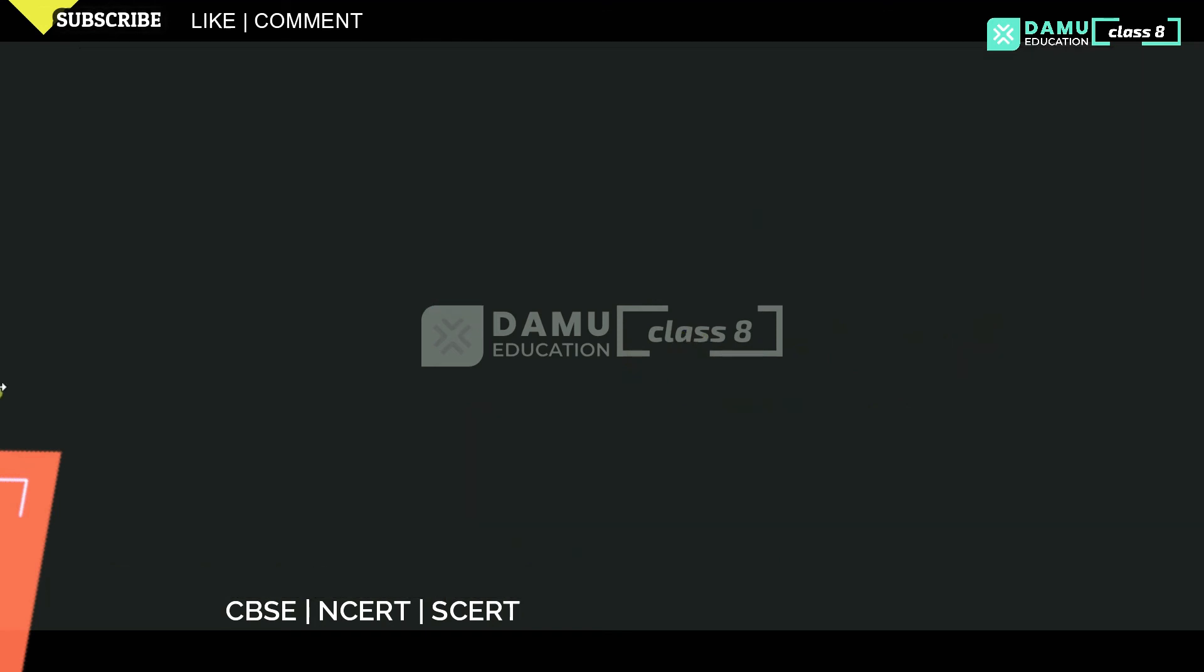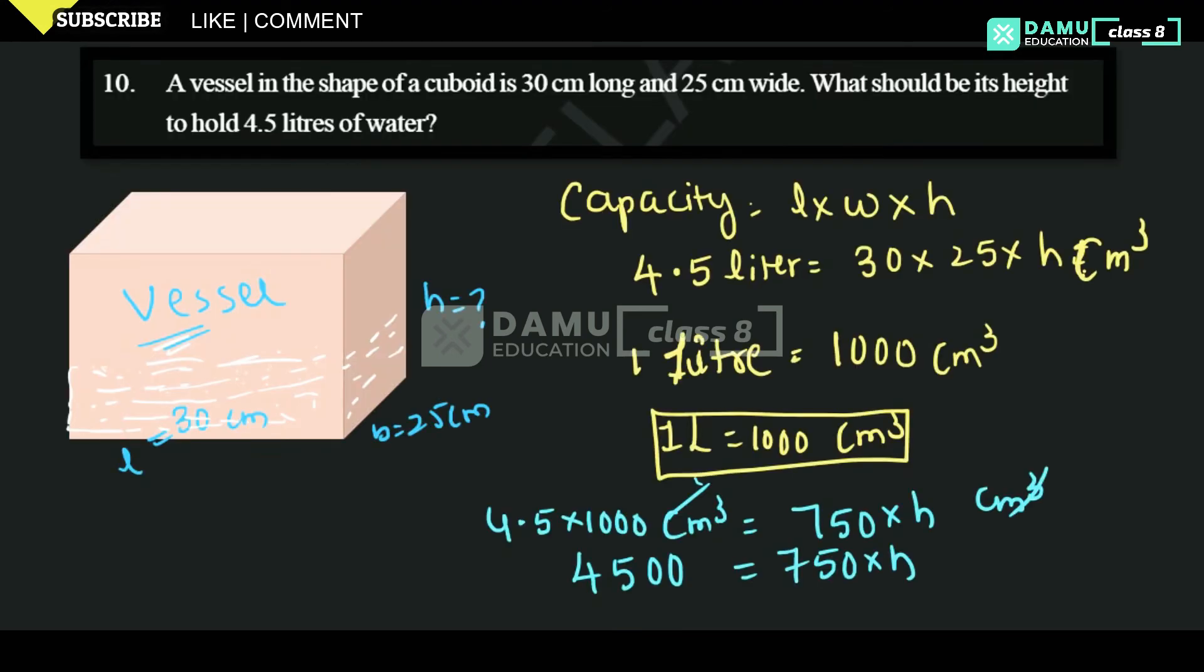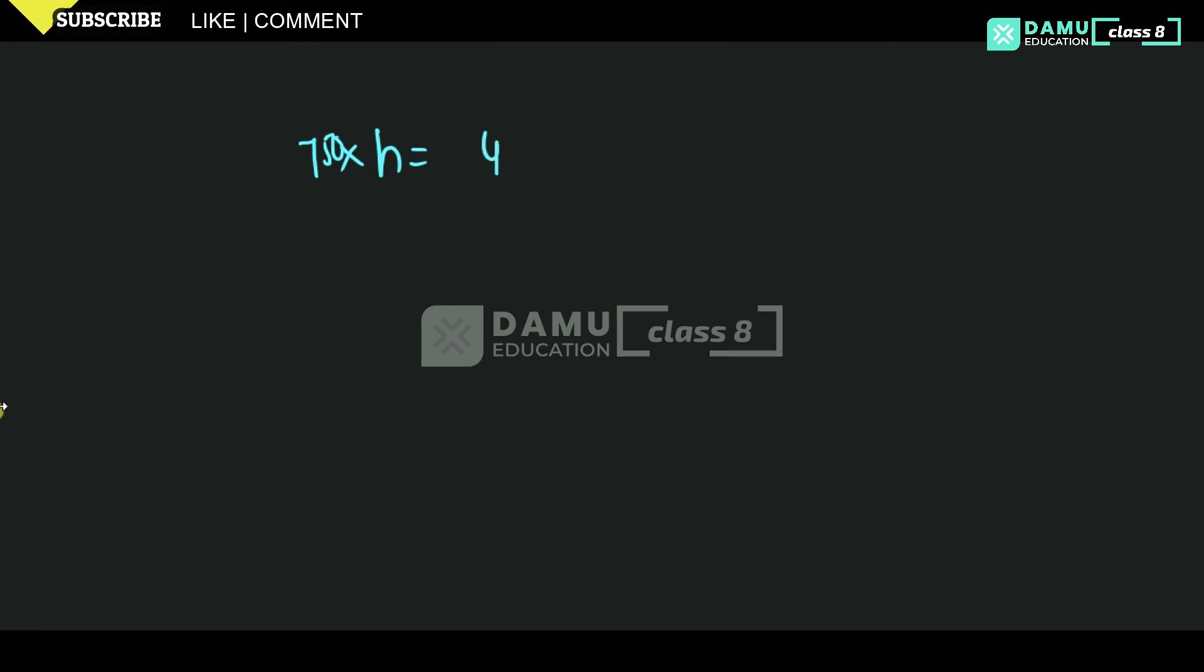So 750 times H equals 4500. H equals 4500 divided by 750.